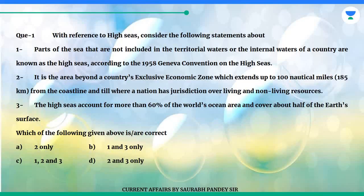Question 1: With reference to the high seas, consider the following statements. 1. Parts of the sea that are not included in the territorial waters or the internal waters of a country are known as the high seas, according to the 1958 Geneva Convention on the High Seas. 2. It is the area beyond a country's exclusive economic zone which extends up to 100 nautical miles, 185 kilometers from the coastline and till where a nation has jurisdiction over living and non-living resources. 3. The high seas account for more than 60% of the world's ocean area and cover about half of the earth's surface.